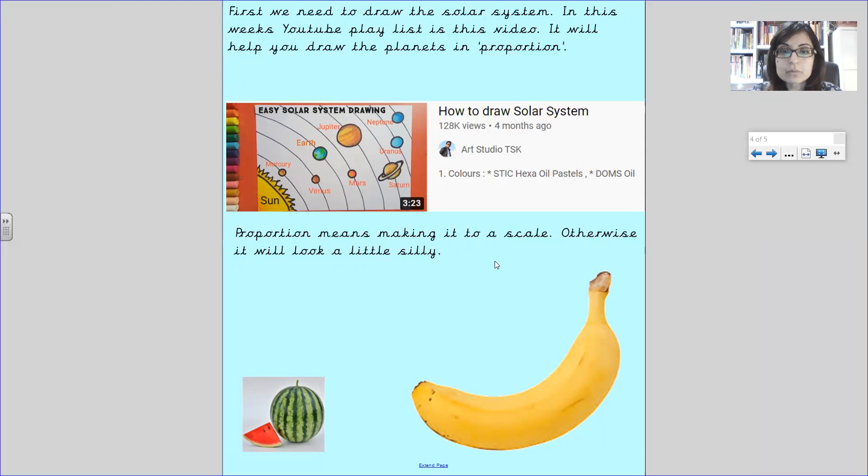We're going to draw the planets in proportion. So for example, if you were going to draw this watermelon and the banana, would you draw the banana larger than the watermelon? Pause the video to have a think. No you wouldn't.